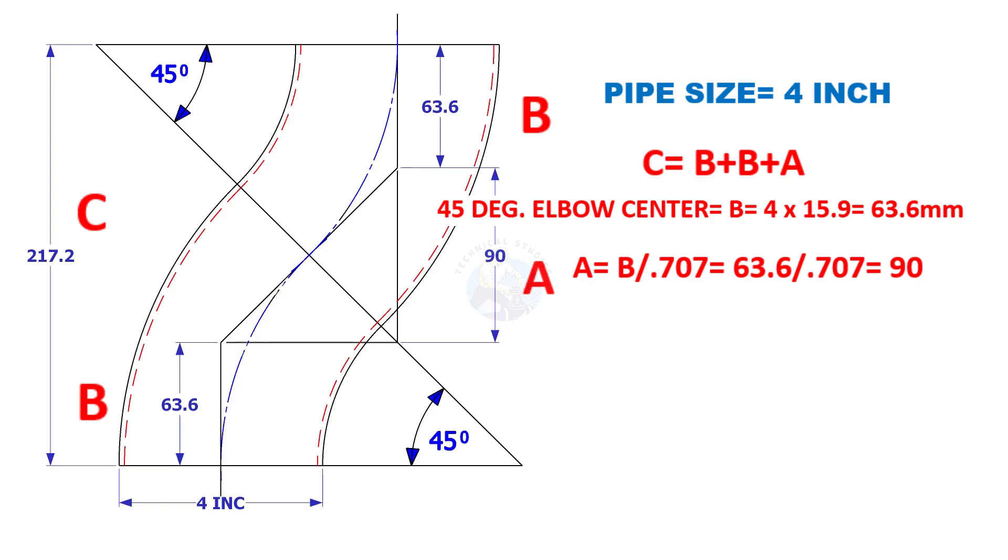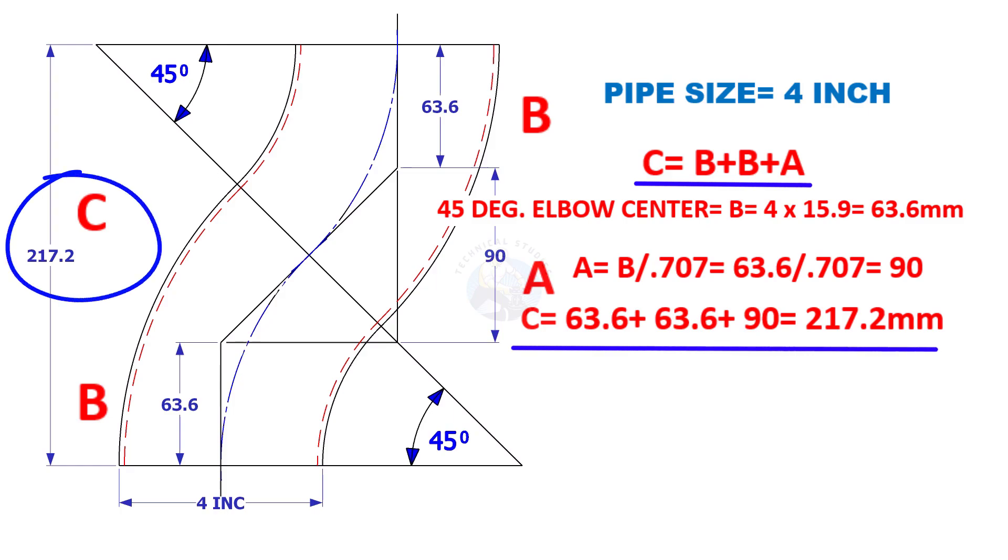The distance of a is b divided by 0.707, which is 90 millimeters. Now b plus b plus a is 217.2 millimeters.